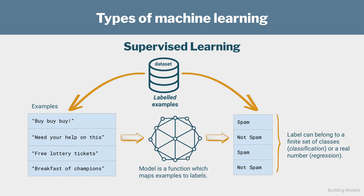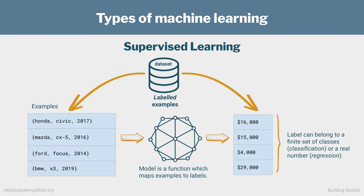For classification tasks, these labels would be from a finite set of classes. So for spam detection, our examples could be emails, and each email would have a label specifying whether it's spam. In the example shown here, we have a dataset of four emails with half being spam. For regression tasks, these labels would be real numbers. For something like predicting the prices of used cars, our examples could be car attributes such as brand, model, and manufacturing year, and each example would be accompanied by a price label. Once our model is trained, it's then used on unseen and unlabeled examples, and hopefully gives good predictions.